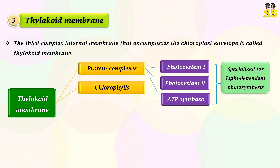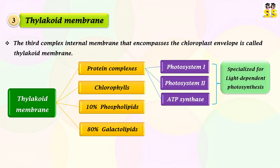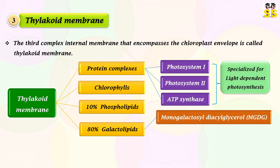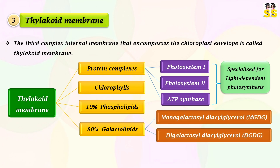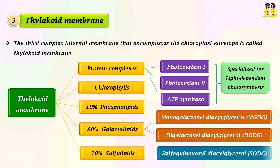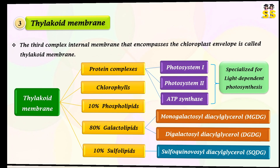Chlorophylls. The thylakoid membrane constitutes 10% phospholipids, 80% galactolipids such as monogalactosyldiacylglycerol and digalactosyldiacylglycerol, and 10% sulfolipids such as sulfoquinovosyldiacylglycerol.